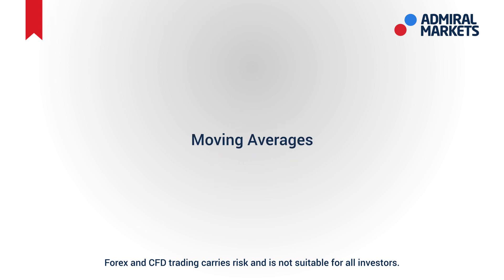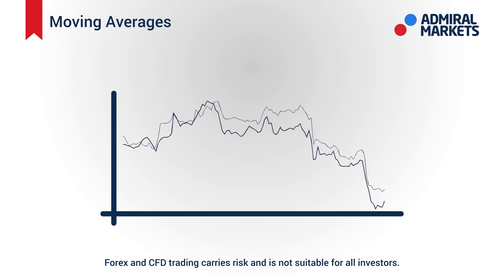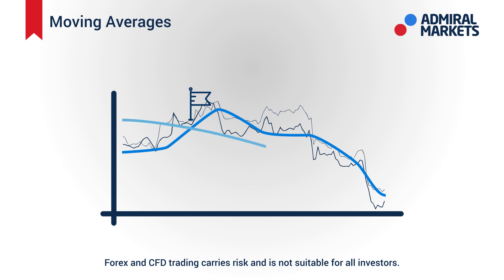Moving Average indicators are widely used in day trading to help identify the overall trade momentum. This indicator works by plotting a line over the average prices of currencies through a predefined period of time. Moving averages confirm a trend when a moving average for a longer time period crosses over a moving average of a shorter time period.